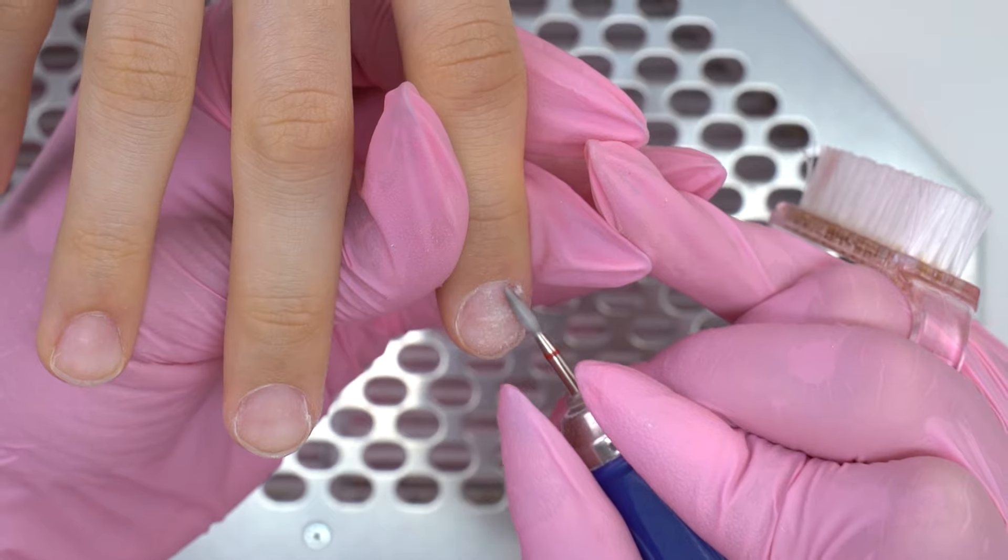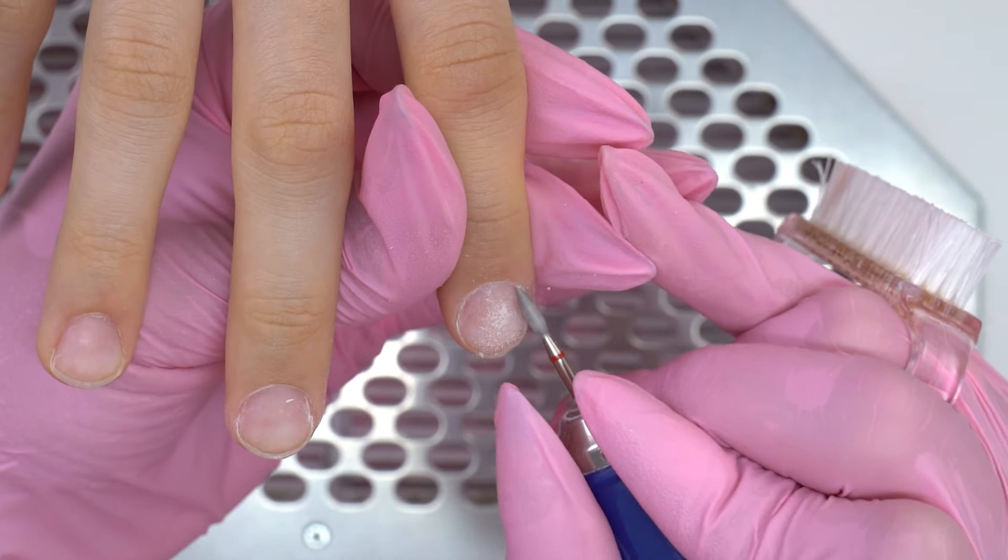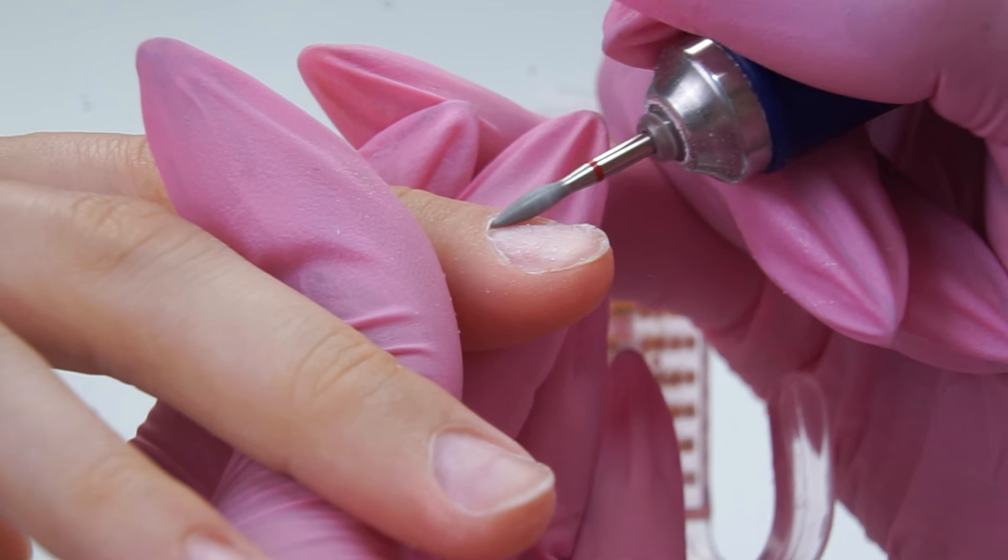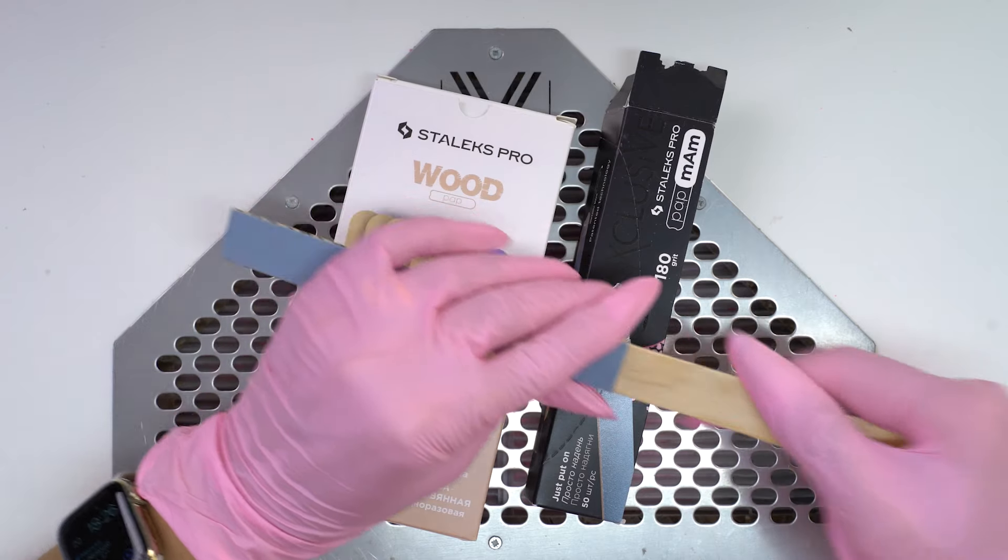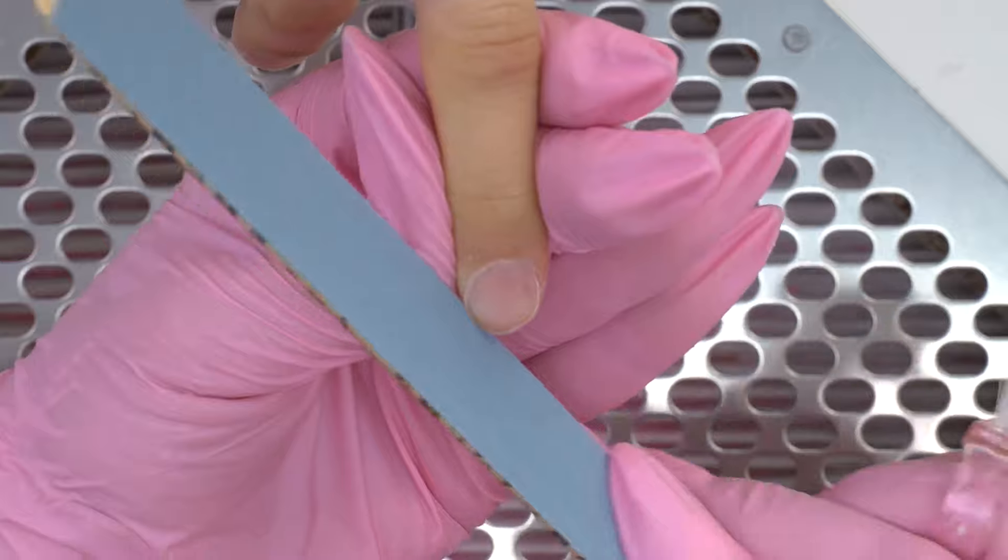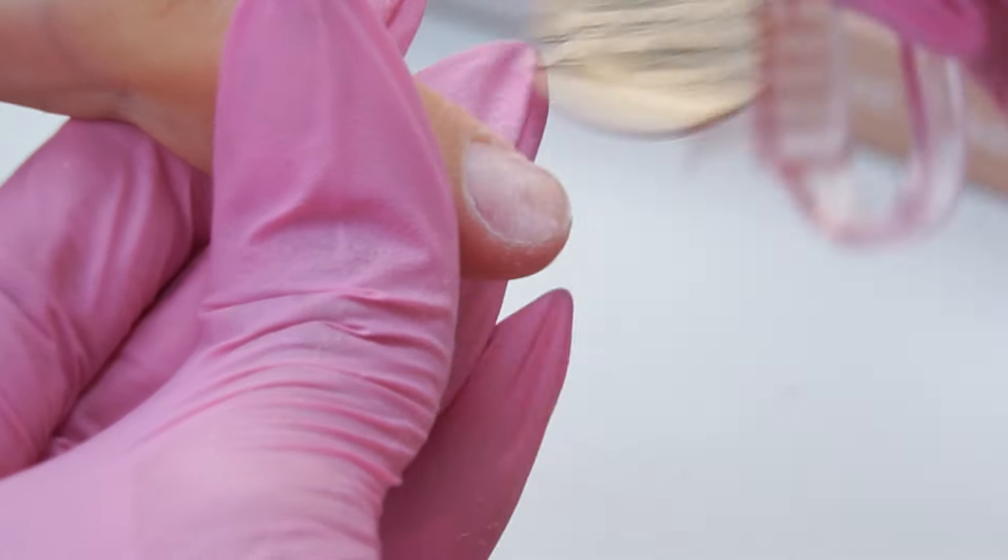For this cuticle type, I have chosen a red flame drill bit. It suits here the best. I completely remove the free edge before sculpting. I polish the surface for better bonding.